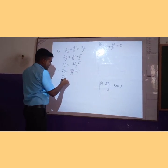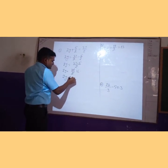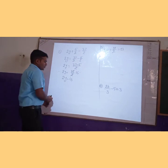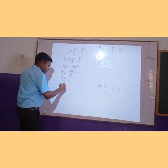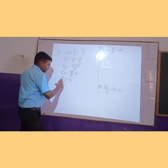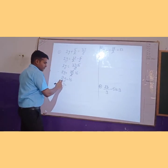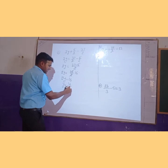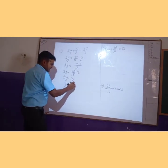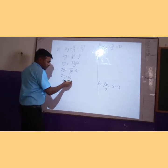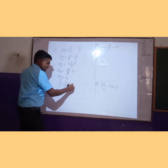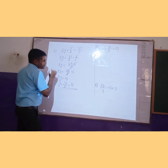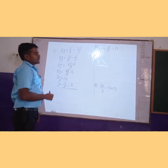So we get 2m is equal to 16. We have to find the value of m, so we transpose 2 from left to right — it is multiplied, so it will be divided. We get m equal to 16 divided by 2. When 2 divides 16 it gives 8. So 8 is the solution.